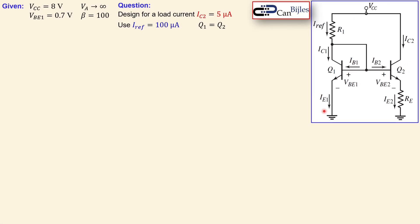Let's look at our circuit. This is the Widlar current source configuration — again those two transistors in a simple current mirror, which we have discussed, but now we have this extra resistor RE which creates the Widlar effect. We have one DC source VCC and R1 which creates the reference current. VBE1 and VBE2 are not exactly equal to each other, and that difference is what creates this low current.